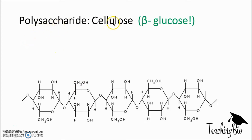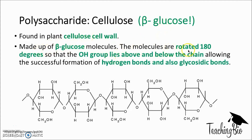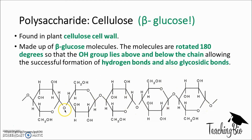The final polysaccharide to know about is cellulose, which is composed of beta glucose molecules and is found in plant cell walls. Each molecule is rotated 180 degrees relative to its neighbour, so that the OH group lies above and below the chain, allowing the successful formation of hydrogen bonds and also glycosidic bonds. So here's one beta glucose molecule, the one next to it is flipped 180 degrees, and alternating continues along, with glycosidic bonds alternating throughout. The OH group lies above and below the chain each time.